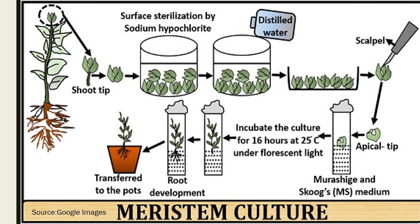We put this explant on the media, obtain totipotent cells, and allow them to grow. We incubate the culture for 16 hours at 25 degrees centigrade under fluorescent light, because the shoot tip requires photosynthesis to take place, and the media used is Murashige and Skoog's media. In the shooting medium the shoot will be formed, and in the rooting medium the root will be formed. The plantlet is formed inside a flask or clean bottle that must be airtight — no contamination, no air allowed in contact with the plant.